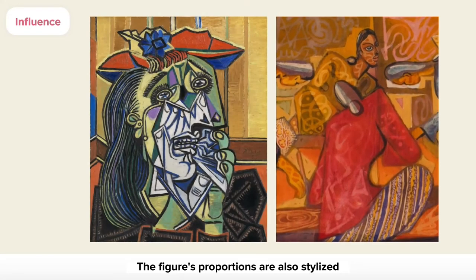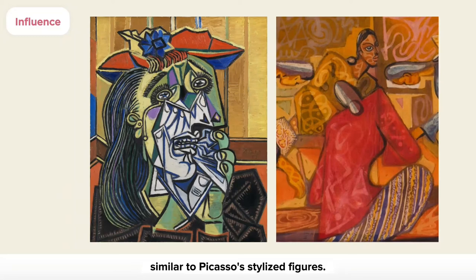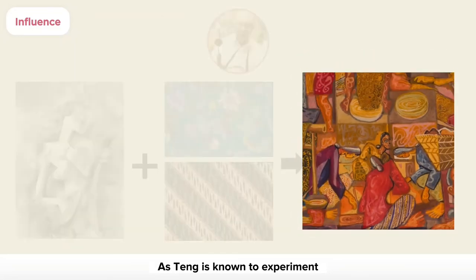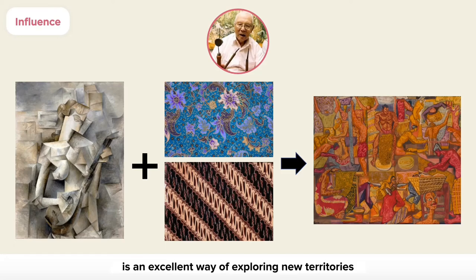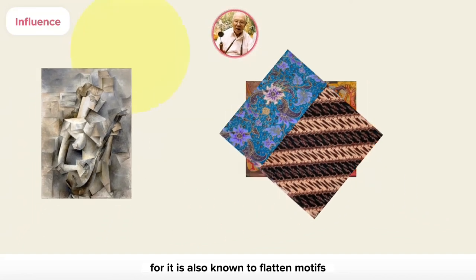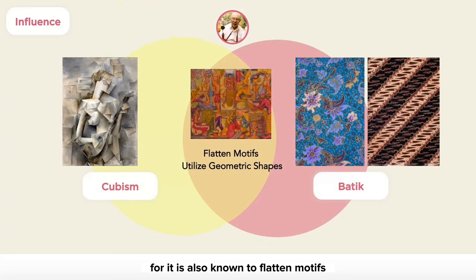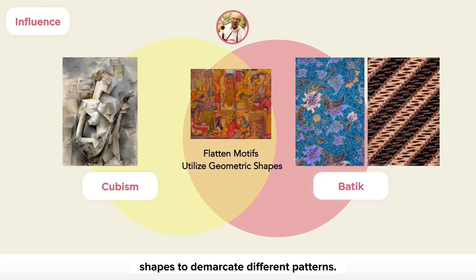The figures' proportions are also stylized in a geometric and exaggerated style, similar to Picasso's stylized figures. As Ting is known to experiment with different aesthetics in order to breathe new life into batik art and elevate it to fine arts, fusing cubism is an excellent way of exploring new territories with the batik medium, for it is also known to flatten motifs and utilize geometric shapes to demarcate different patterns.